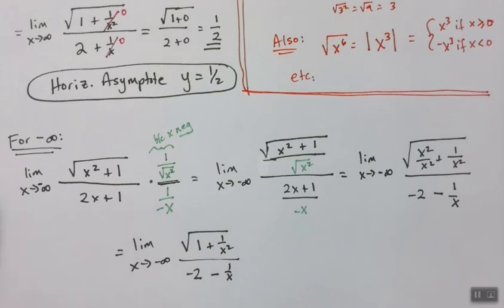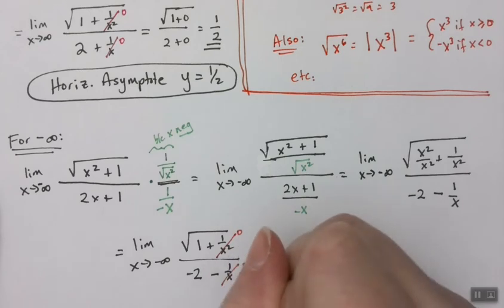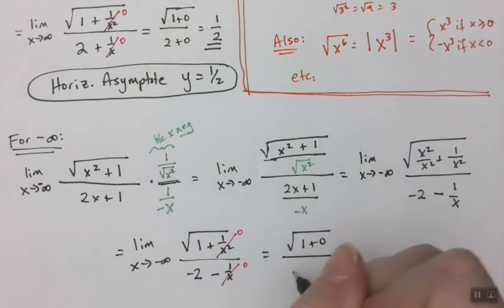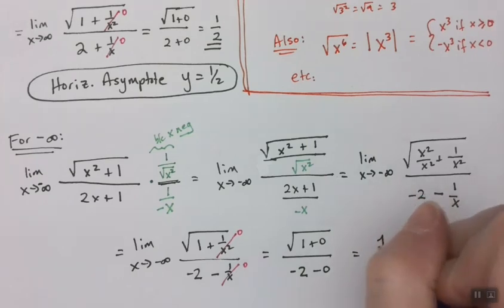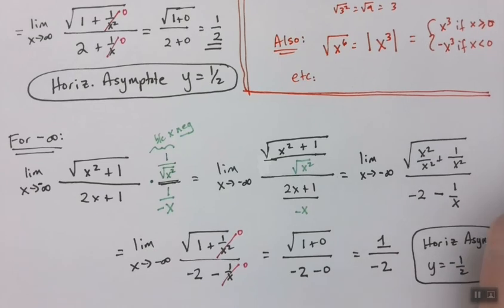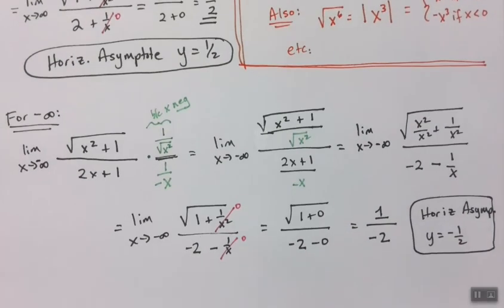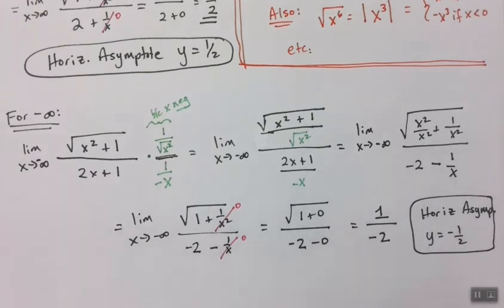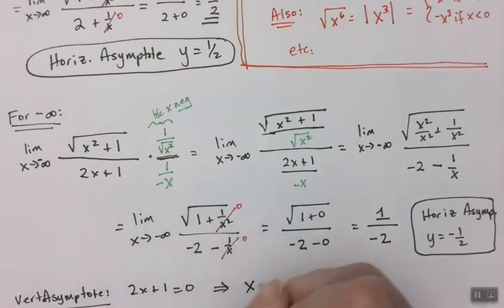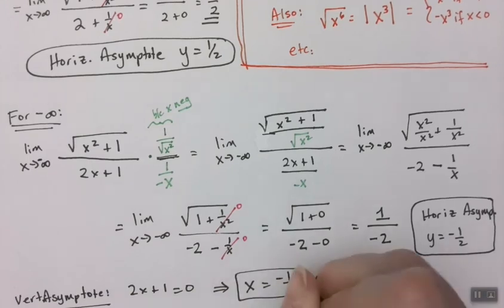As x goes to negative infinity, 1/x² goes to 0 and 1/x goes to 0. So I have the square root of 1 over negative 2, which is 1 over negative 2, giving negative 1/2. So my horizontal asymptote on this side is y = −1/2. And the vertical asymptote is very easy: 2x + 1 = 0 means x = −1/2. There's your vertical asymptote.